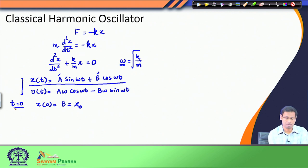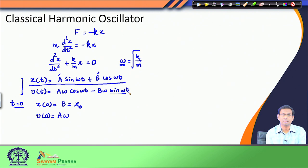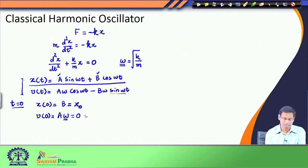Now I apply the same t = 0 condition for the speed. The speed v(0): putting t = 0 gives cos(0) = 1, so I get a·ω, and the sine term gives sin(0) = 0. Therefore v(0) = a·ω. But since the spring was at rest at the beginning, the initial speed was 0. Since omega is not zero, this means a = 0. So now I know the values of both a and b.